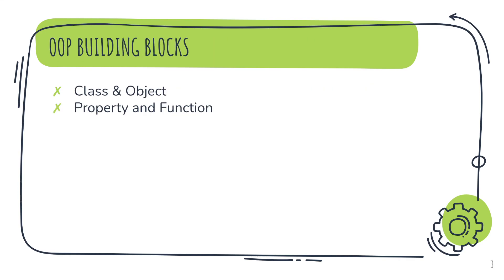In object oriented programming we have classes and objects, that is the most important thing of this programming paradigm. And inside a class we have properties, that is our variables, and functions that we already learned about in the previous section.